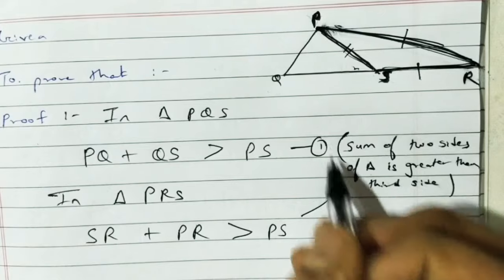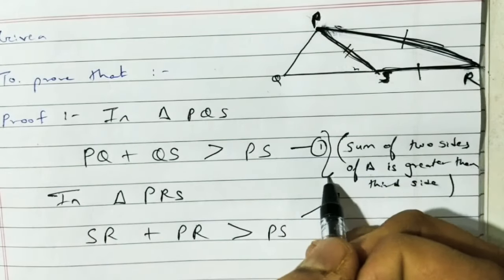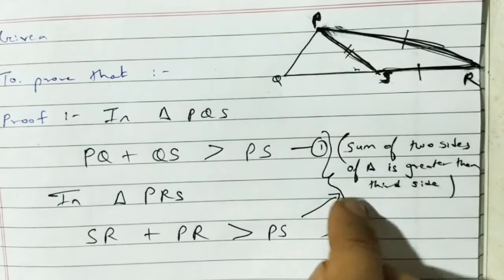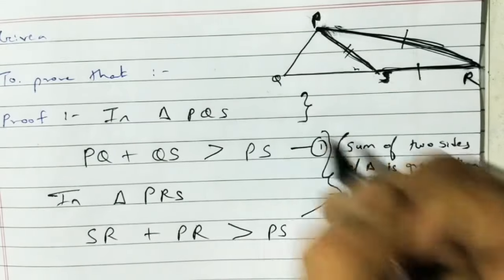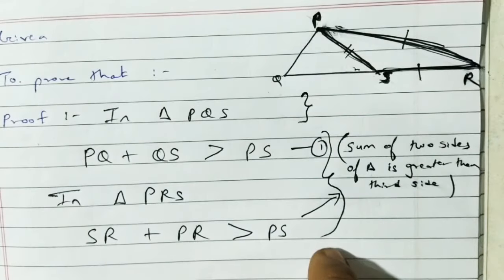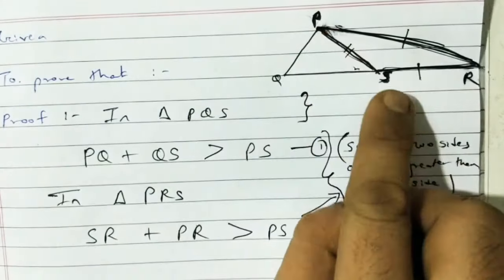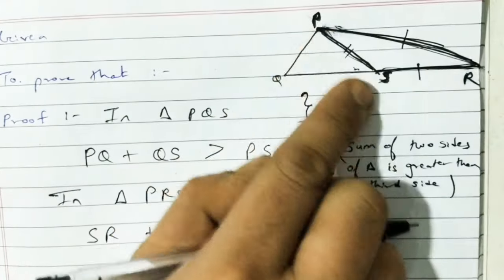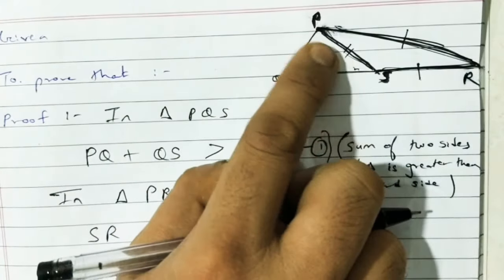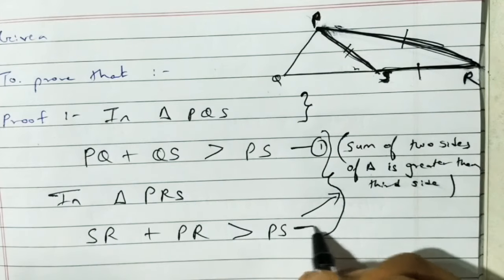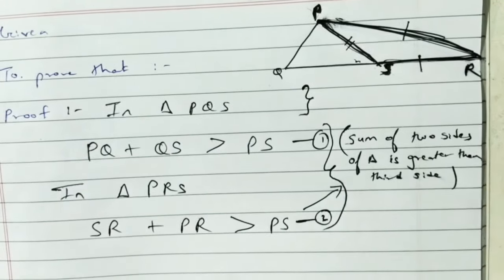If you don't put the arrow, you can make curly braces for the reason — same reason applies. So SR plus PR is greater than PS. This is equation 2.